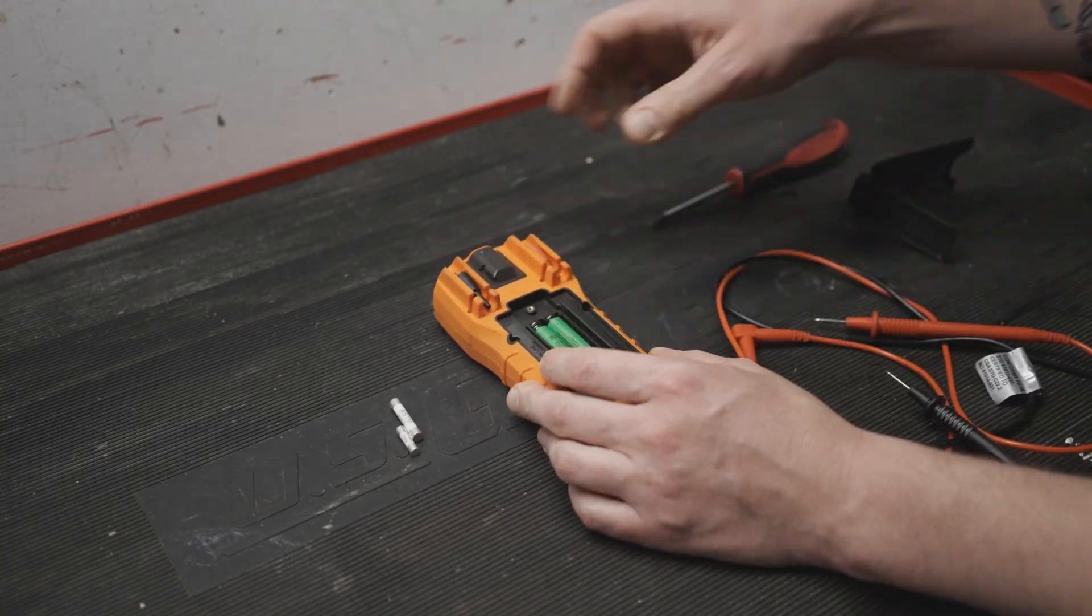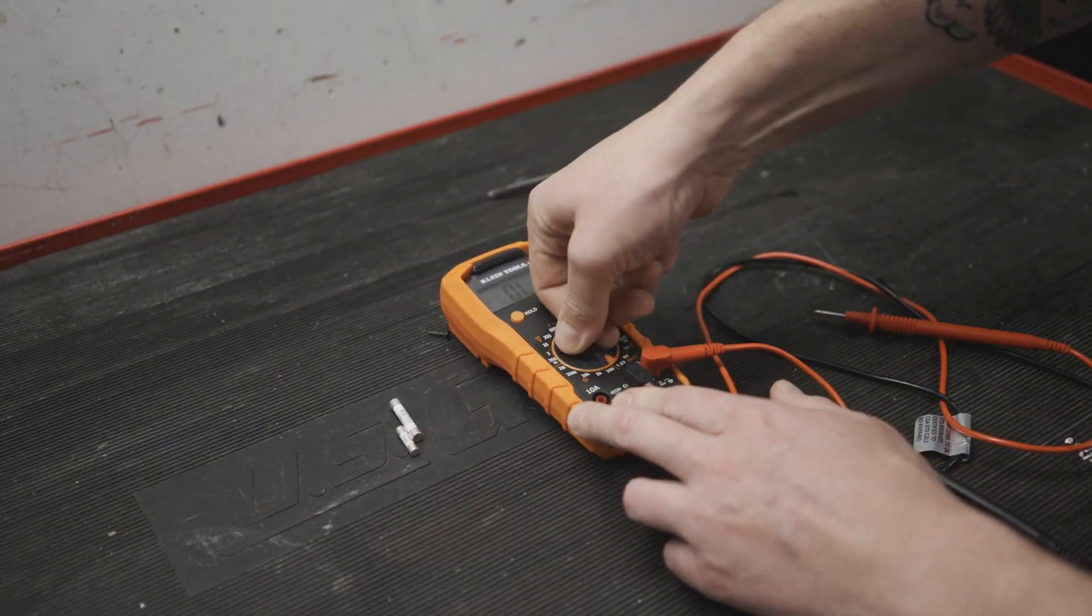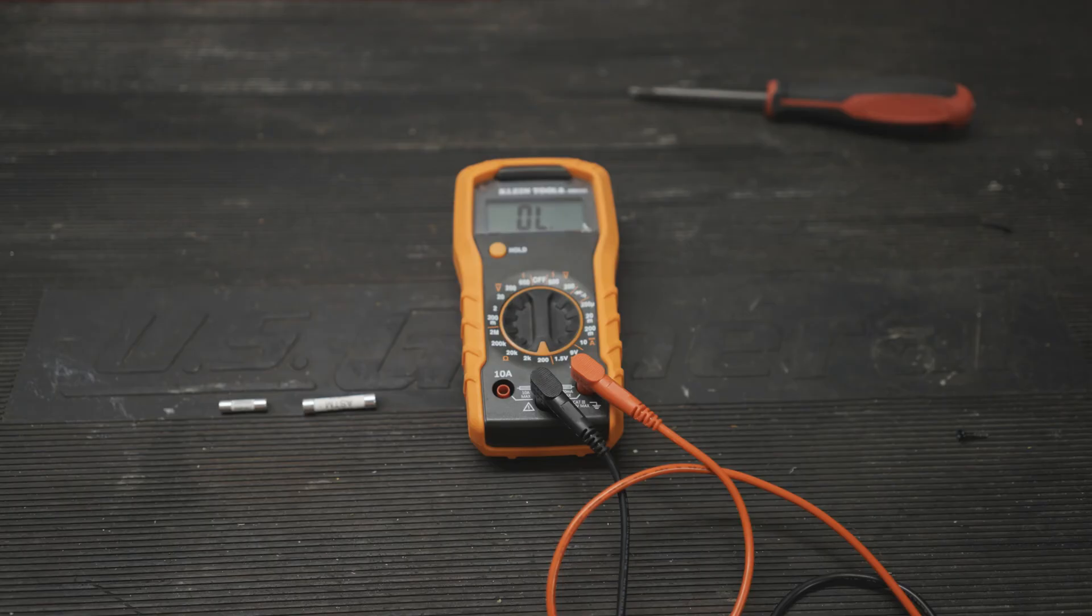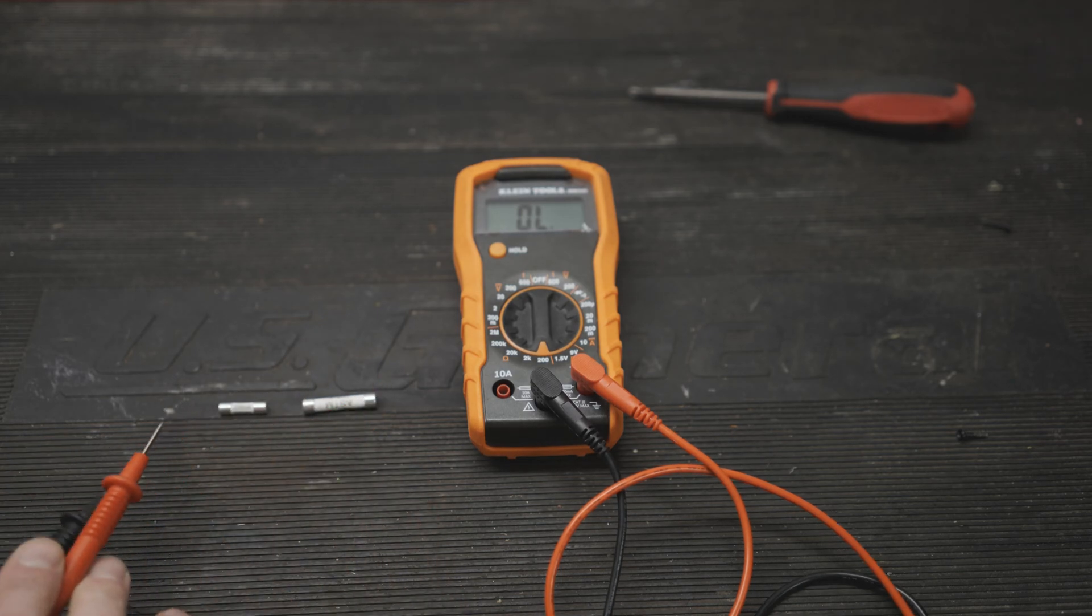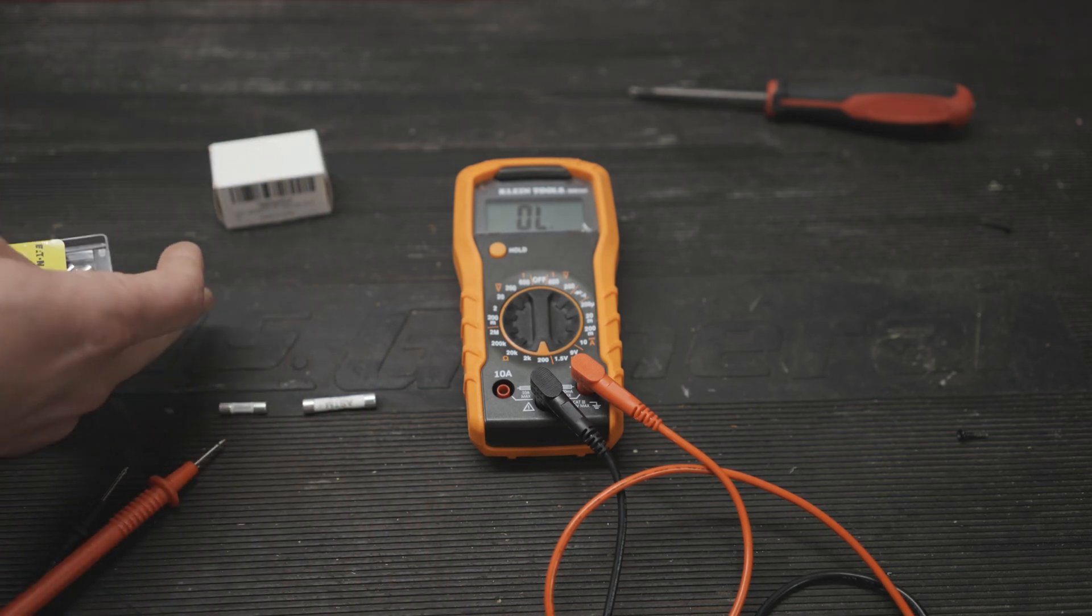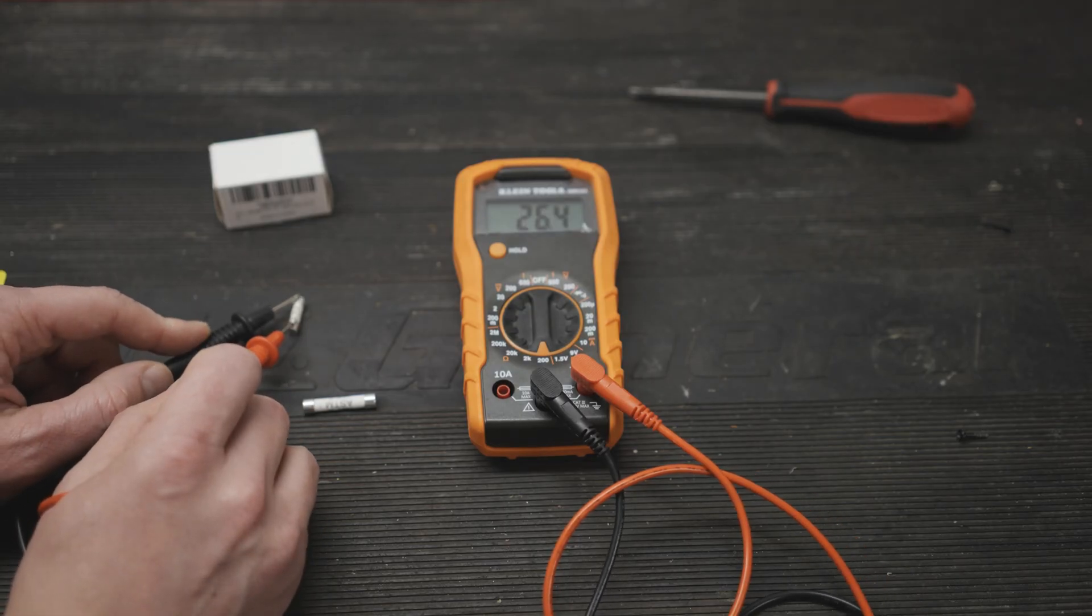You don't need the fuses installed to check resistance so there's no need for a second multimeter, just power yours back on and check the resistance of the fuses. Mine still displays OL which confirms they're both blown. If I grab a new fuse you can see that there is a small resistance reading when touching the probe to each end.